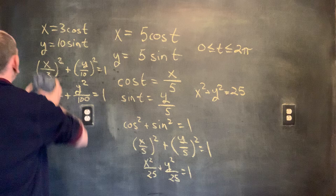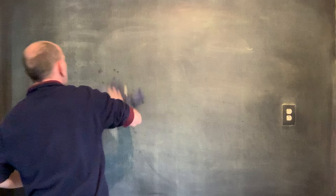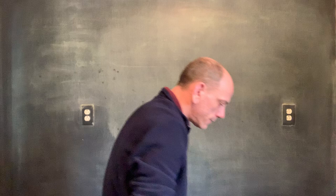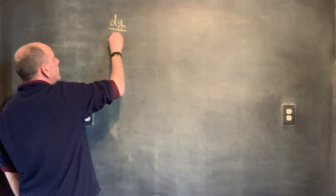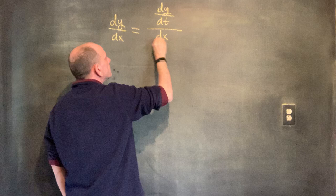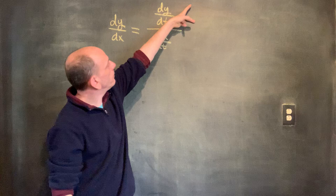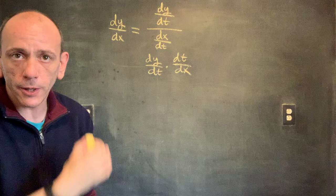Now let's look at the derivative of a parametric equation. It's relatively straightforward — we're just playing around with differentials using the chain rule. dy/dx equals dy/dt divided by dx/dt. If you multiply by the reciprocal, that's dy/dt times dt/dx, which is just the chain rule. Since Y is given as a function of T and X is also a function of T, taking their derivatives with respect to T is perfectly natural. The only added step is dividing them.